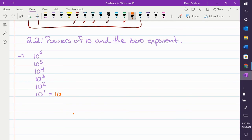So 10 to the 1 is just 10. What's 10 squared? What's 10 cubed? What's 10 to the 4? What's the next number going to be? And 10 to the 6.